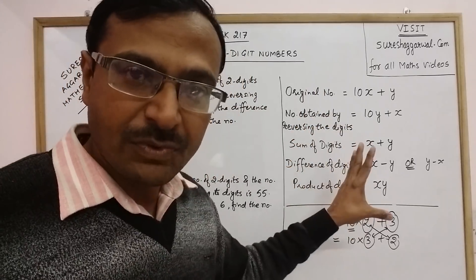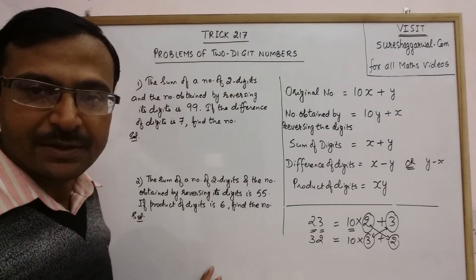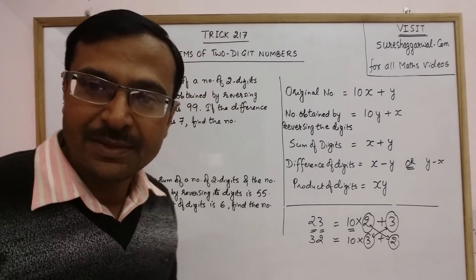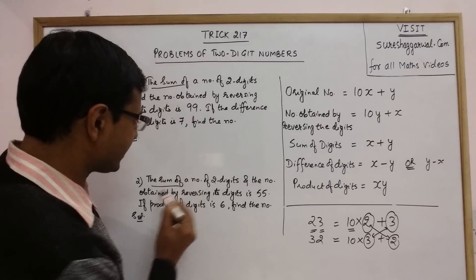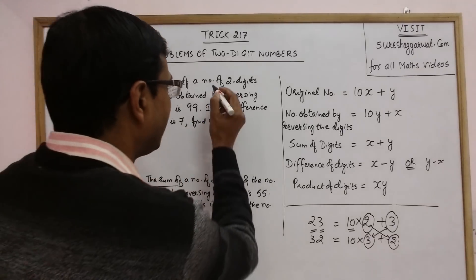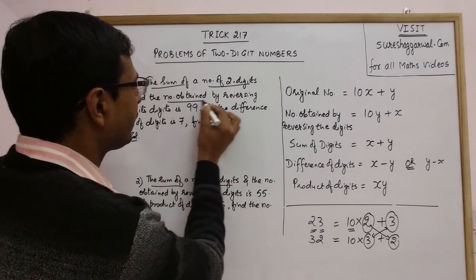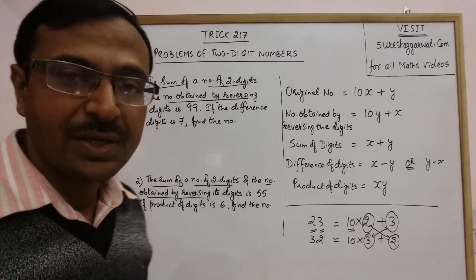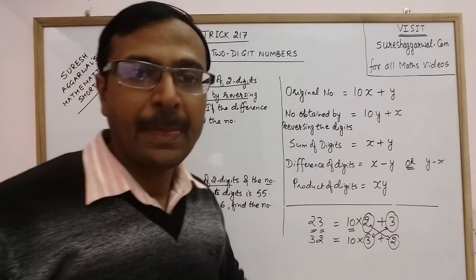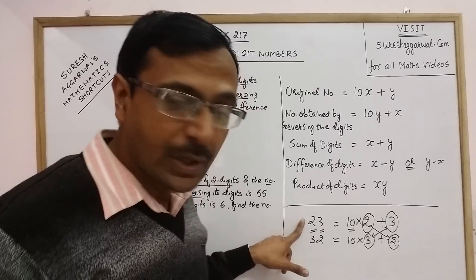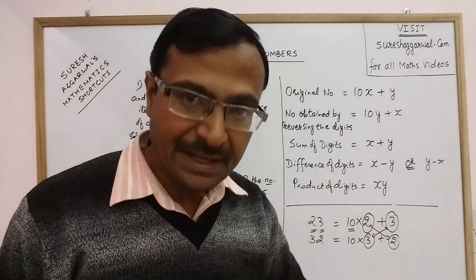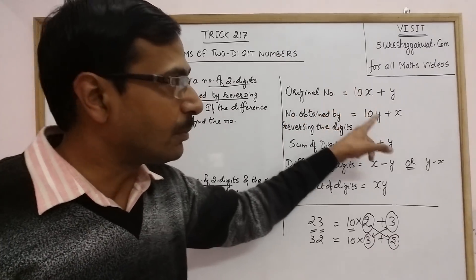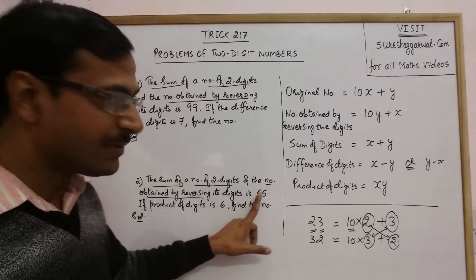Once you know this basic concept, we can solve some special problems. I have taken two problems in which the original number and the number obtained by reversing the digits both appear. In both statements, we are given the sum of a two-digit number and the number obtained by reversing its digits — just like 23 plus 32, or 71 plus 17, or 89 plus 98. This sum is given as 99 in the first case and 55 in the second.